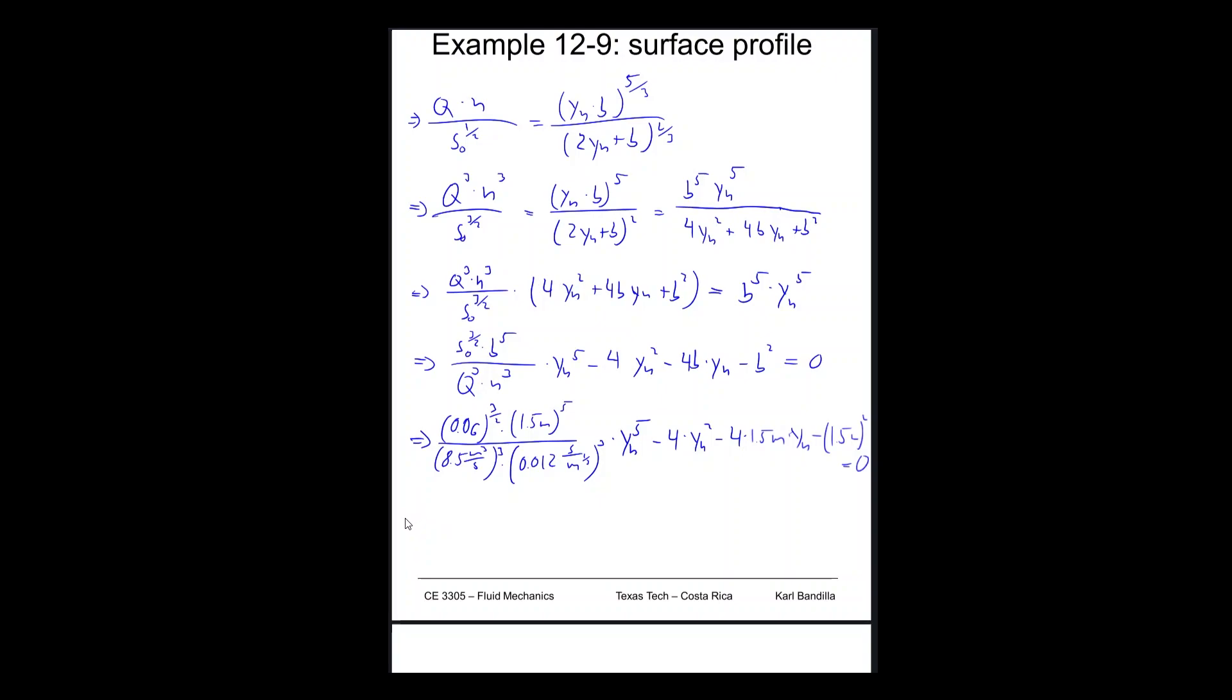We stick in numbers. Then we get our slope, a fairly steep slope. So 0.06 meters per meters, 3 halves. The width was 1.5 meters to the 5th. Q was 8.5 cubic meters per second to the 3rd. And then our n, 0.012 seconds over meter to the 1 third, all to the 3rd. That's just our first coefficient. yn to the 5th. Fortunately, the other ones are much easier. Minus 4 times yn squared, minus 4 times the width, 1.5 meters times yn, and then minus 1.5 meters squared. All that is equal to zero.